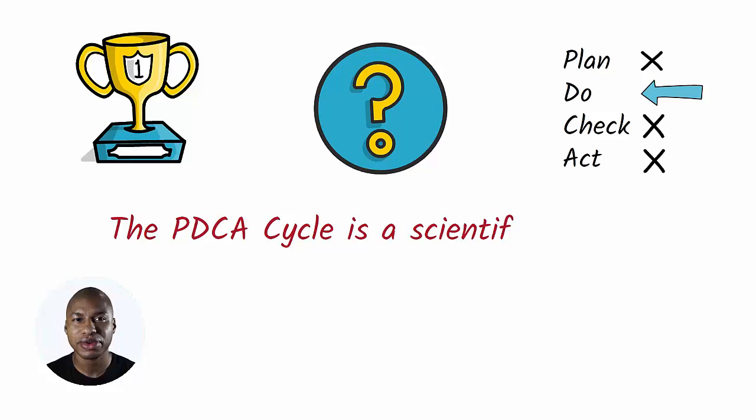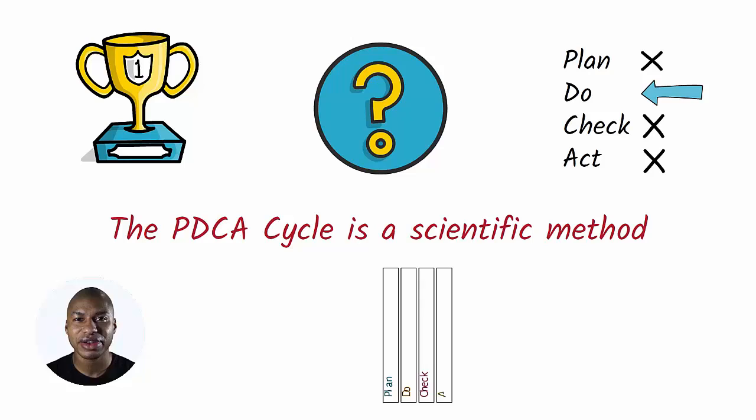The PDCA cycle is a scientific method. Deming pointed out that the four phases had to be balanced. It is not correct to go fast on the plan, to spend a lot of time on the do, to skip the phase of check, and to spend little time on the act phase.